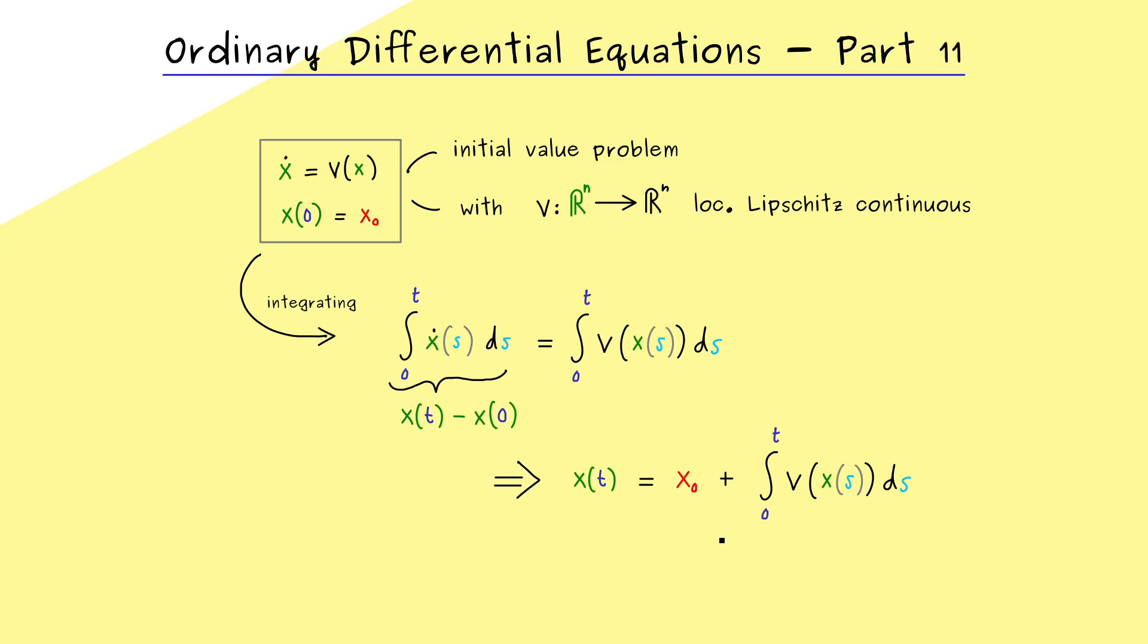So not complicated at all. And this is indeed our solution of the initial value problem. However, this does not help so much, because the solution x we find on the right hand side here again. Hence, it is only an implicit formula for the solution of the initial value problem. However, it definitely helps us for showing the existence of a solution. And in order to do that, we have to give a name to the right hand side here. And let's do that with a capital phi.